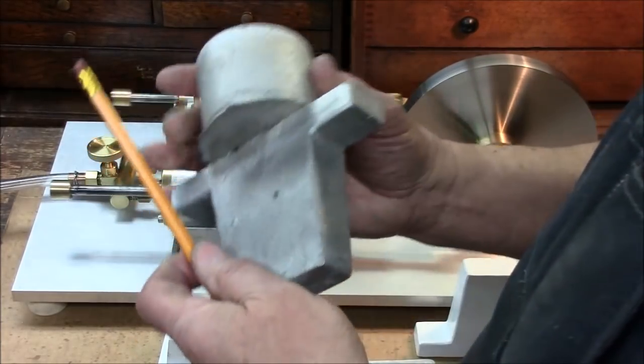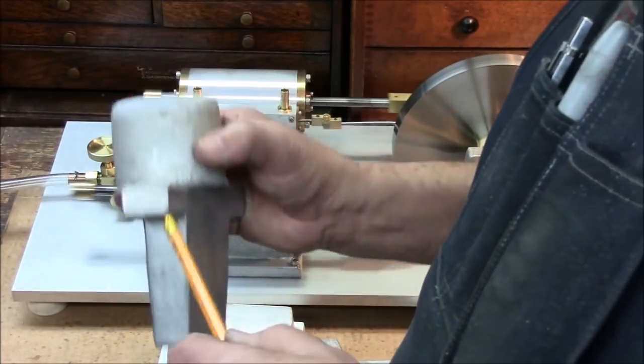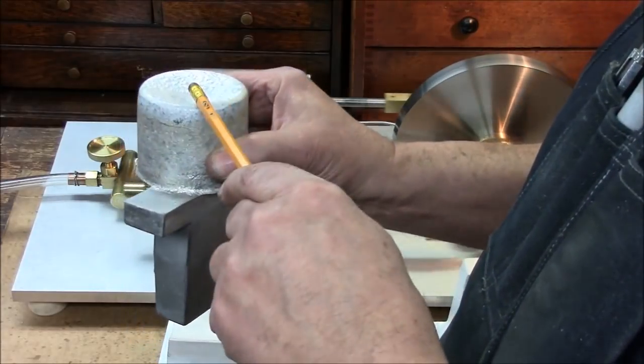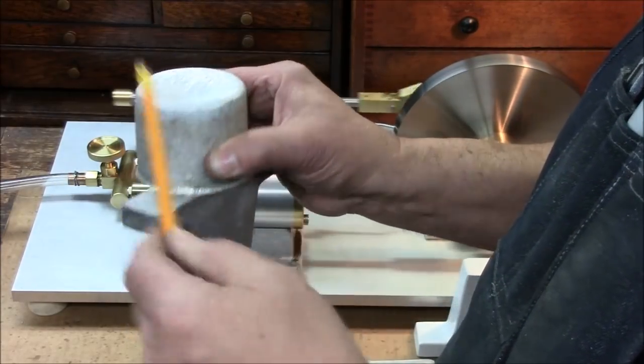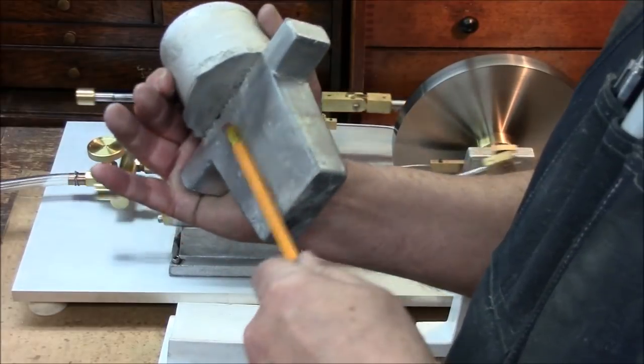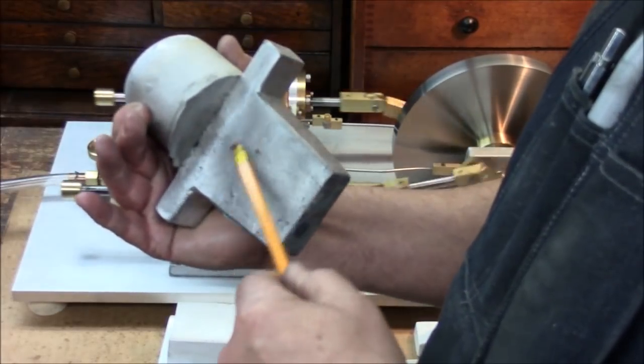My second attempt is this. A much larger sprue, more volume, wider, so it would cool slower. This one actually came out pretty good. There's no voids here.